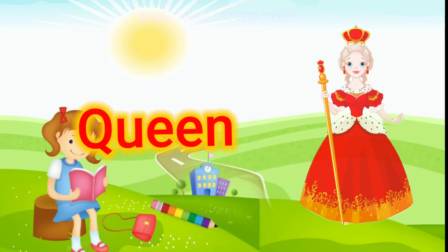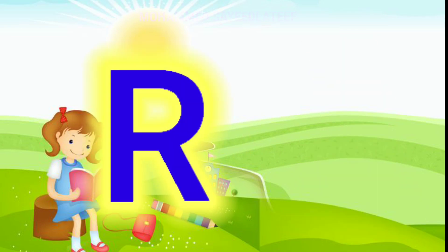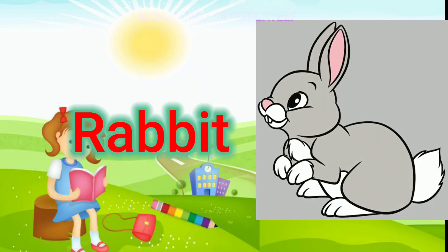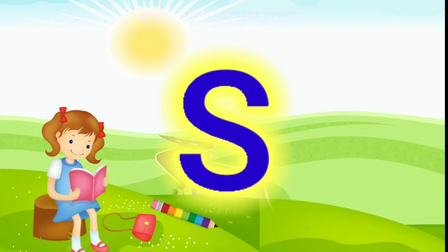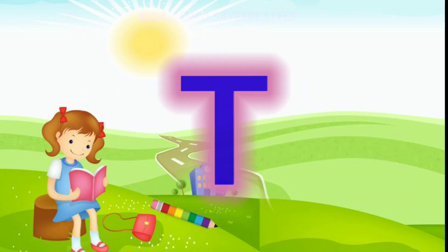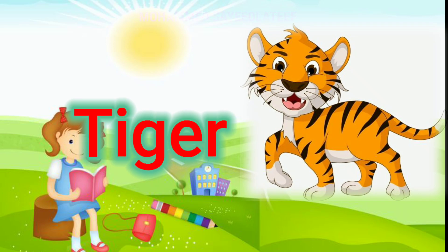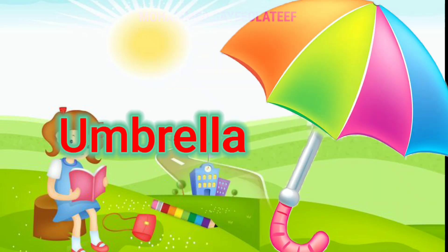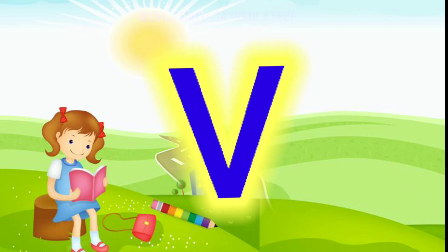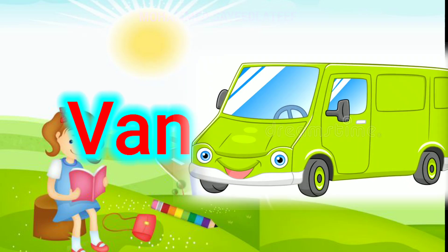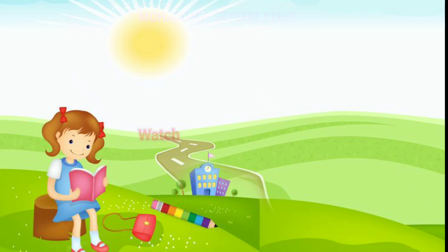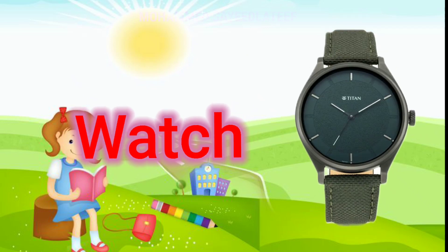Q for queen, R for rabbit, S for sheep, T for tiger, U for umbrella, V for van, W for watch.